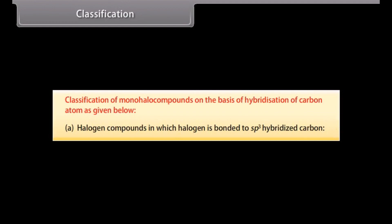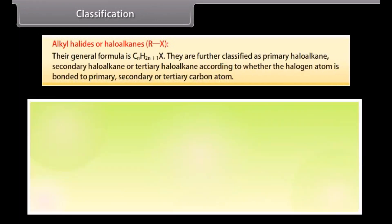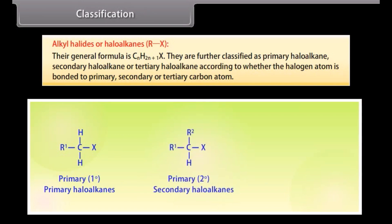Classification of mono-halo compounds is based on the hybridization of the carbon atom. Halogen compounds in which halogen is bonded to sp3 hybridized carbon are alkyl halides or haloalkanes. Their general formula is CnH2n+1X. They are further classified as primary, secondary, or tertiary haloalkane according to whether the halogen atom is bonded to a primary, secondary, or tertiary carbon atom.